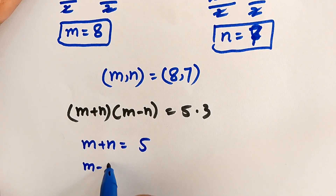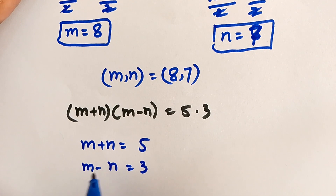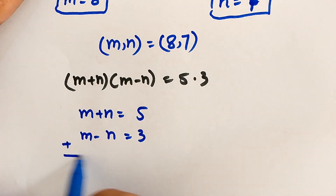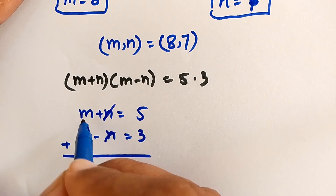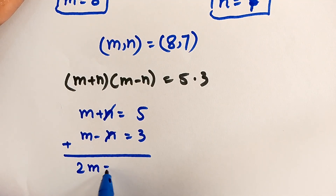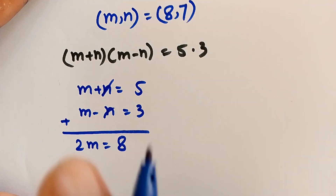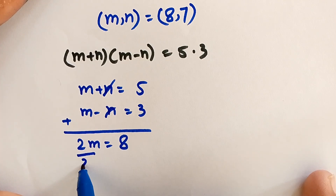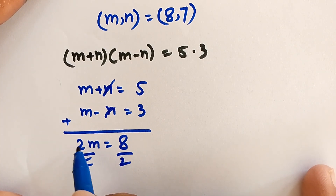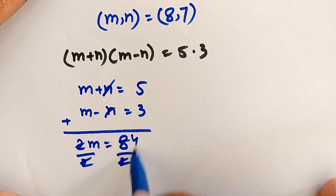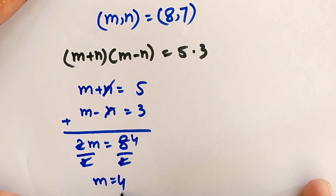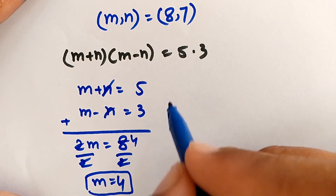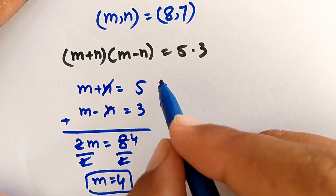To find the value of m, we add the two equations. The n terms cancel, giving 2m equals 8. Dividing both sides by 2, m is equal to 4. This is the value of m from case two.